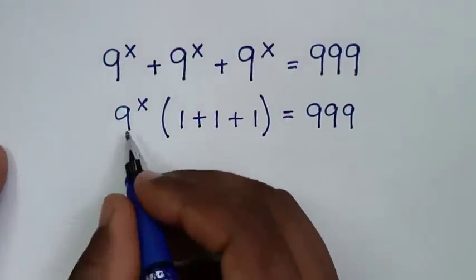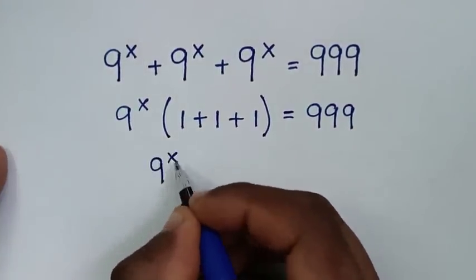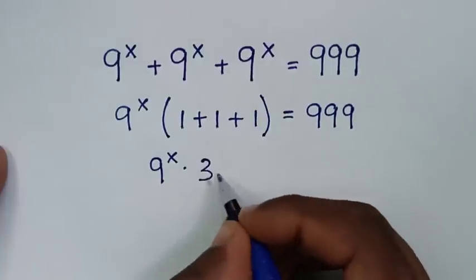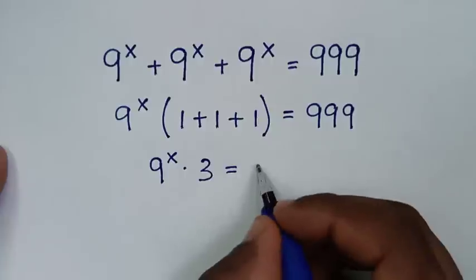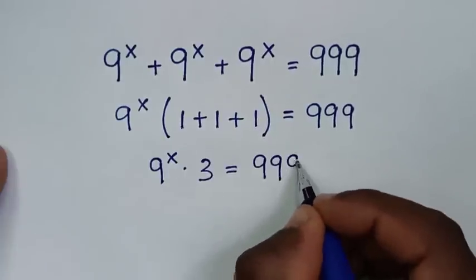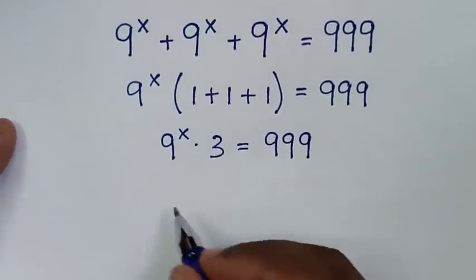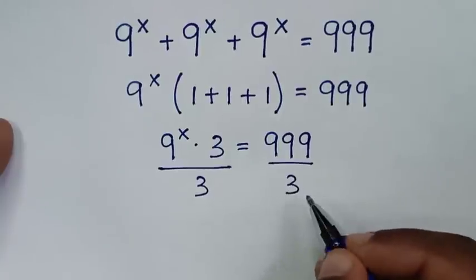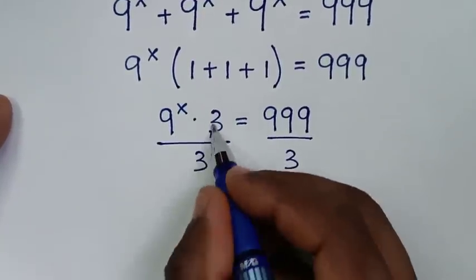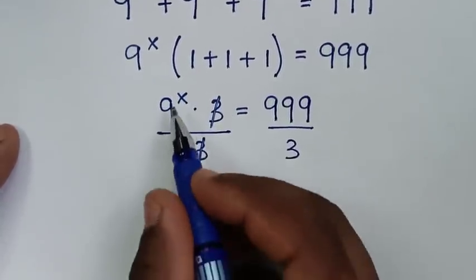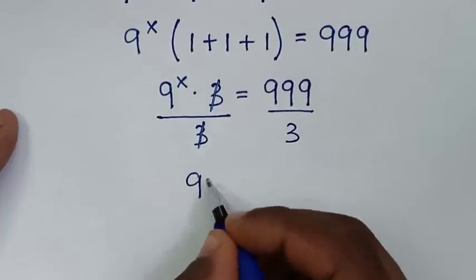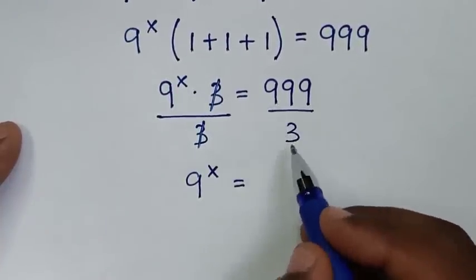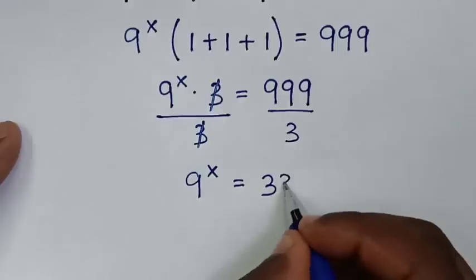Then it will be 9 power x times 1 plus 1 plus 1, which is 3, is equal to 999. Then we'll divide by 3 on both sides, so the 3 will cancel. Then it will be 9 power x is equal to 999 divided by 3, which is 333.